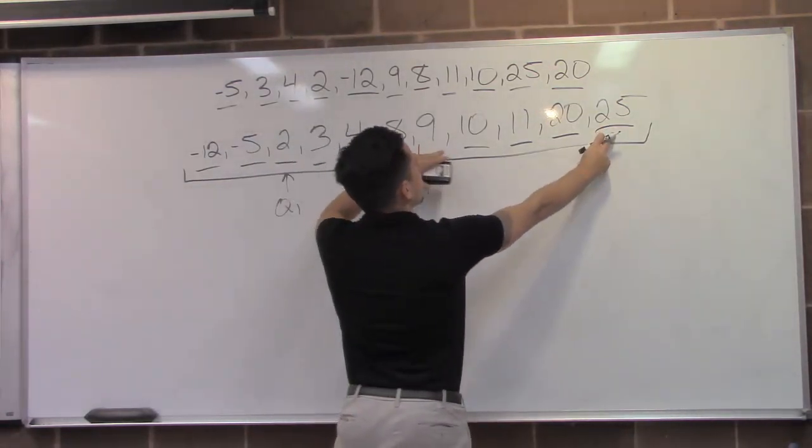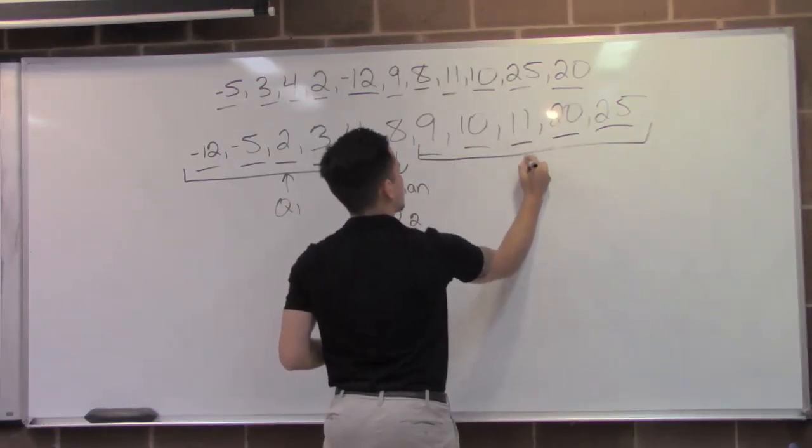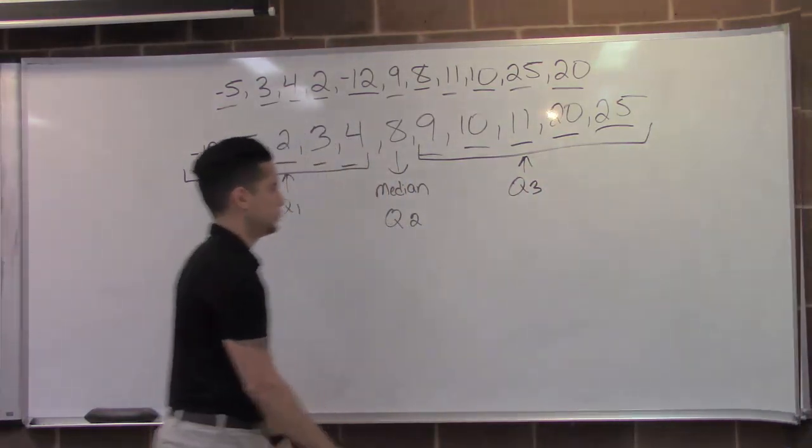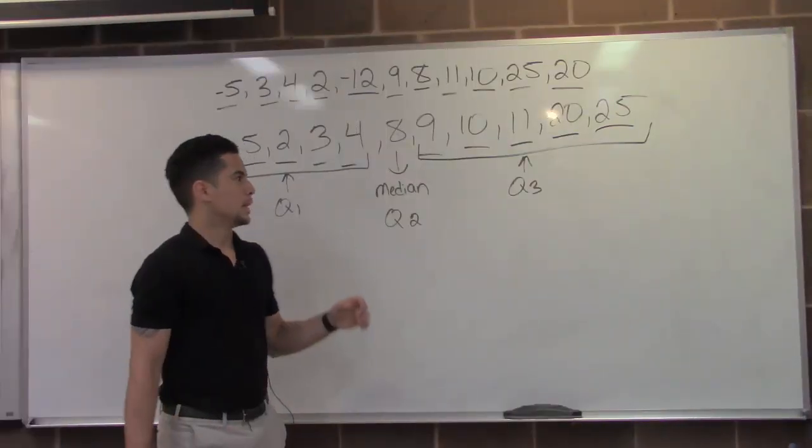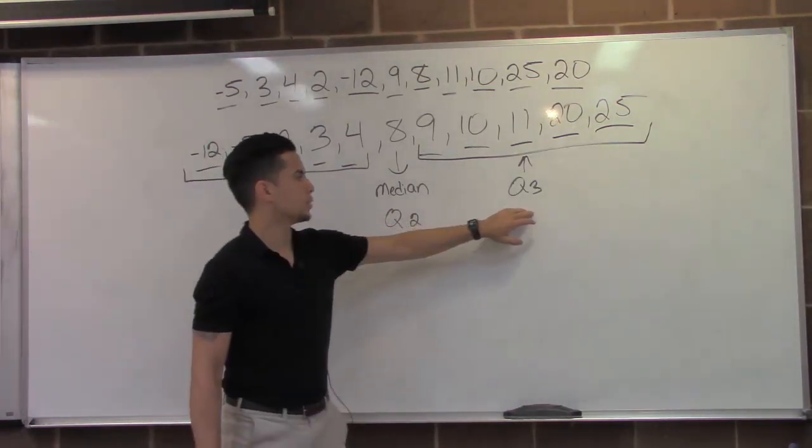And then the same thing over here, nine, twenty-five, ten, twenty and have eleven right here as quartile three. Now that we've found our quartile one and quartile three, now we need to determine what would be our minimum and maximum.